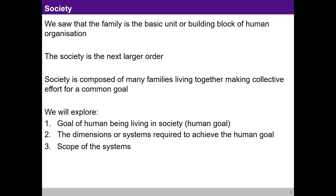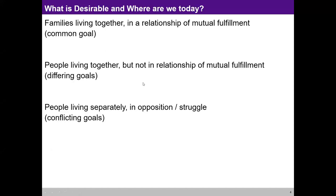If you have conflicting goals, what will happen? There are three possibilities. First: families living together in a relationship of mutual fulfillment, having a common goal. Second: people living together but not in a relationship of mutual fulfillment, having differing goals. Third: people living separately, in opposition or struggle, having conflicting goals. What is desirable — the first, second, or third? And where are we today?